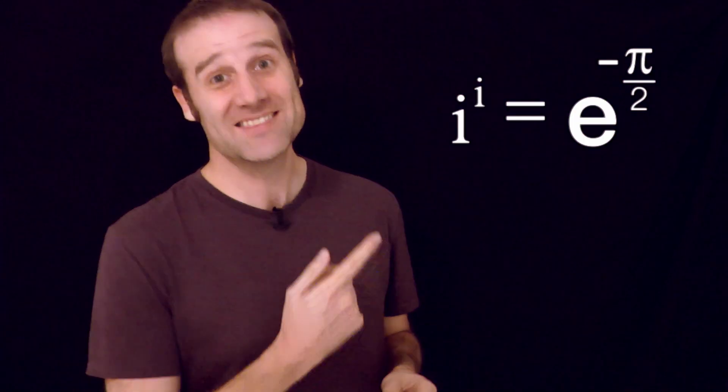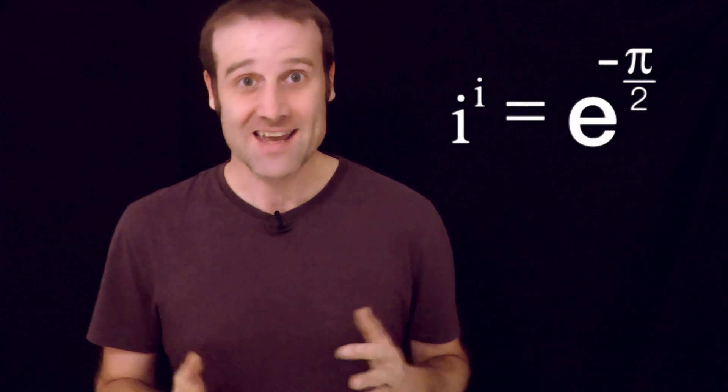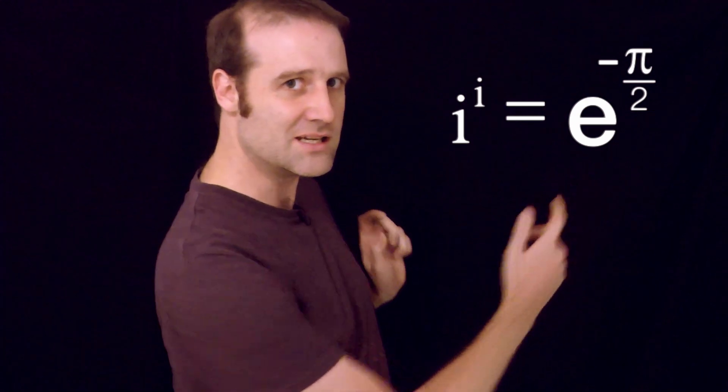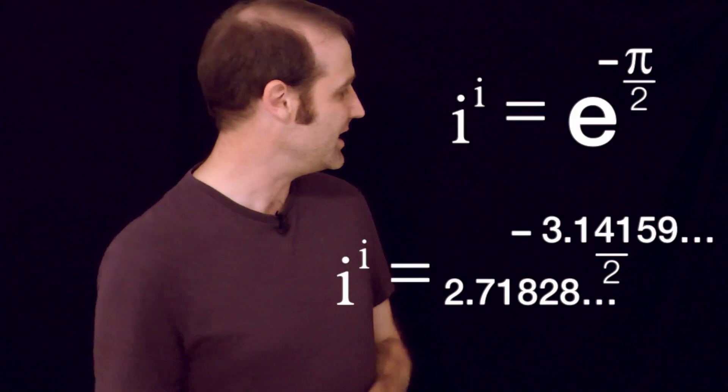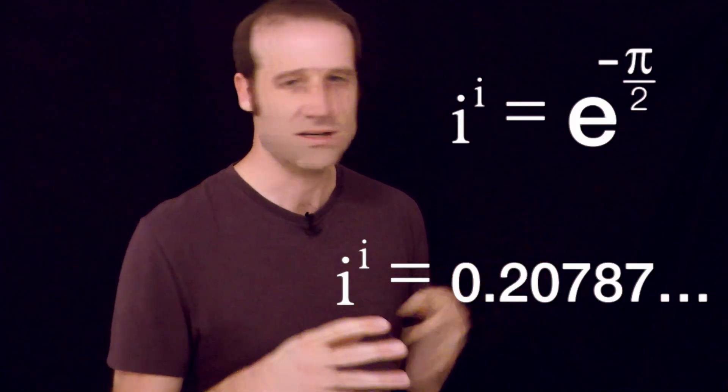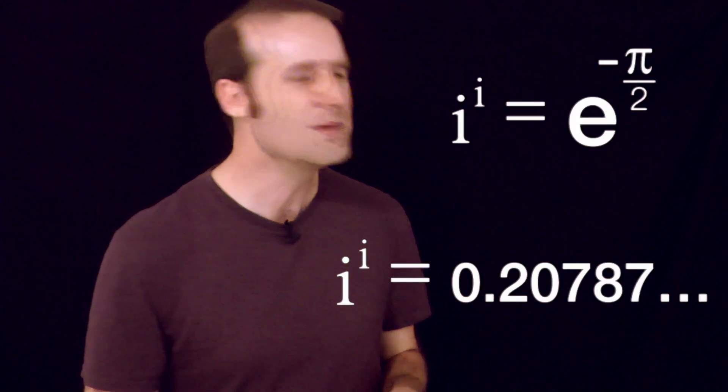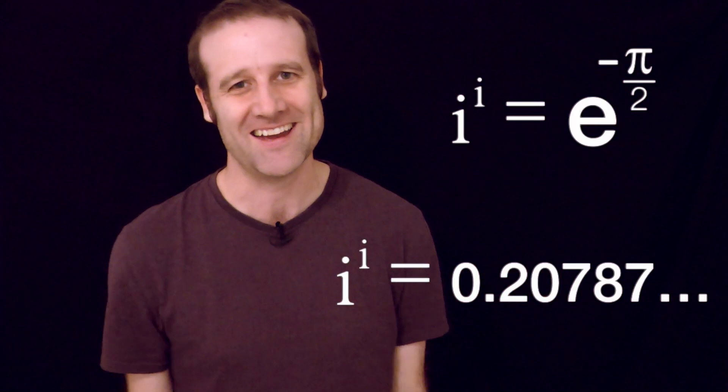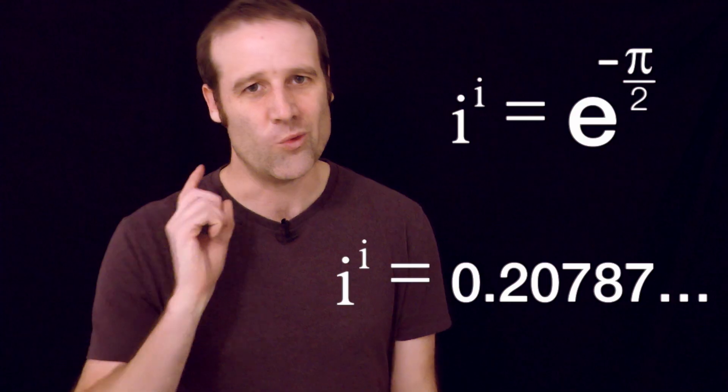How cool is that? I mean, I think that is an incredible result. The imaginary number to the imaginary number is e to the negative pi on 2. Now, what's partly so exciting about that is everything on the right-hand side over there is a real number. So we can slap some values in there. And it turns out that i to the i equals 0.207879 and a bunch of other digits after that. So it's about a fifth. That's the moral of this video. i to the i is about one-fifth.